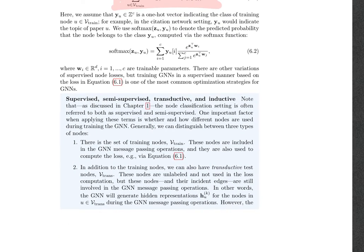There is an expanded version of the loss formula with four important terms: supervised, semi-supervised, transductive, and inductive. Let's look at what helps us distinguish between these terms in the context of training and designing graph neural networks.